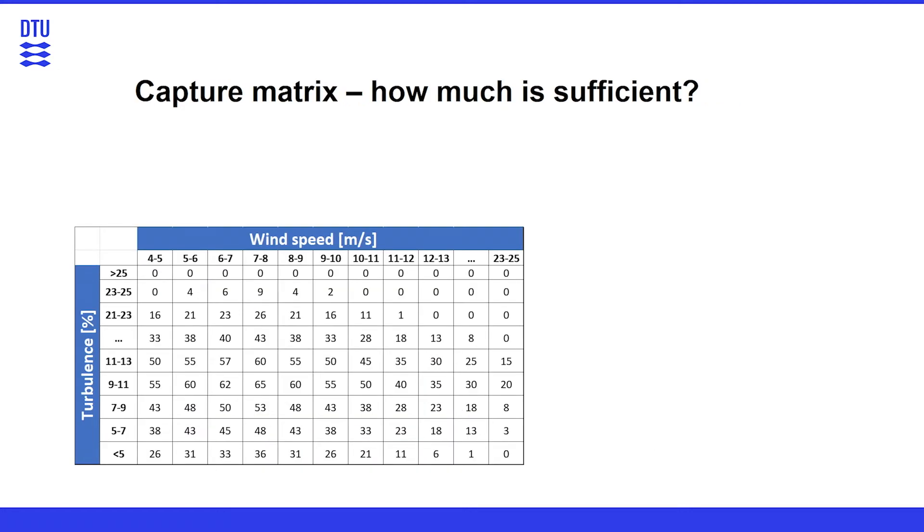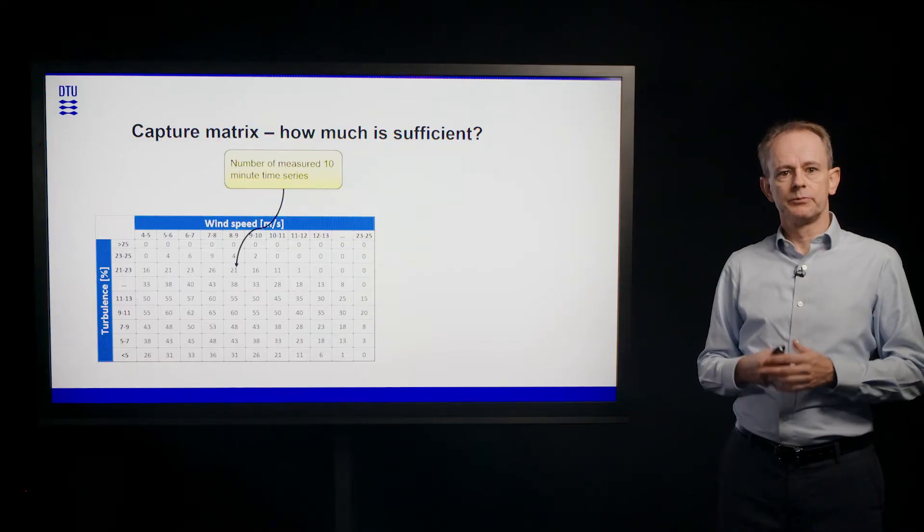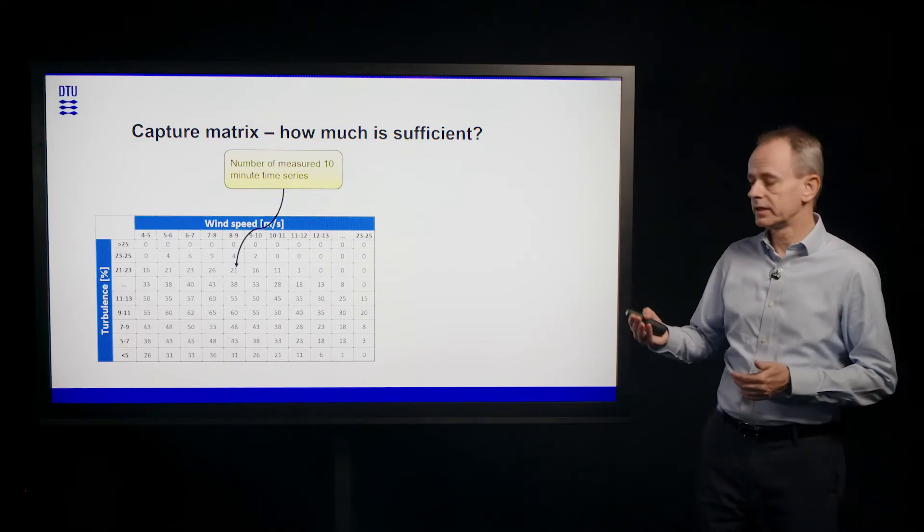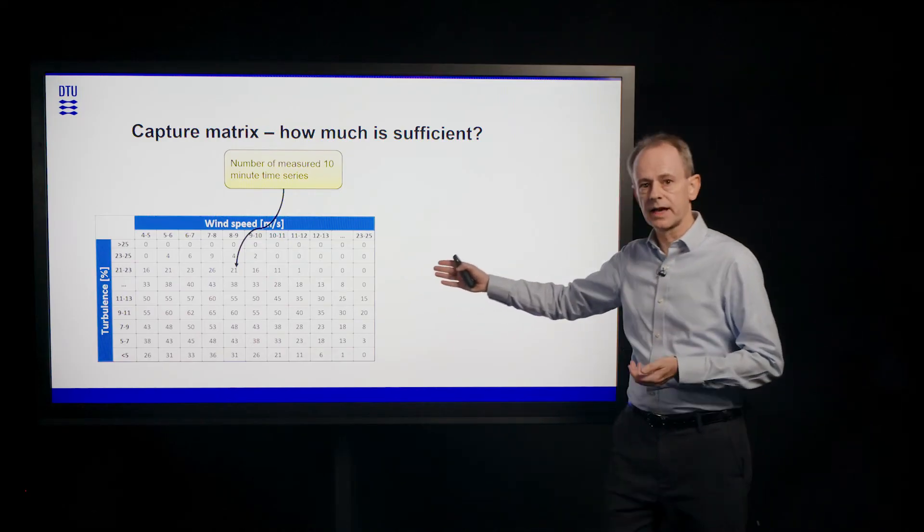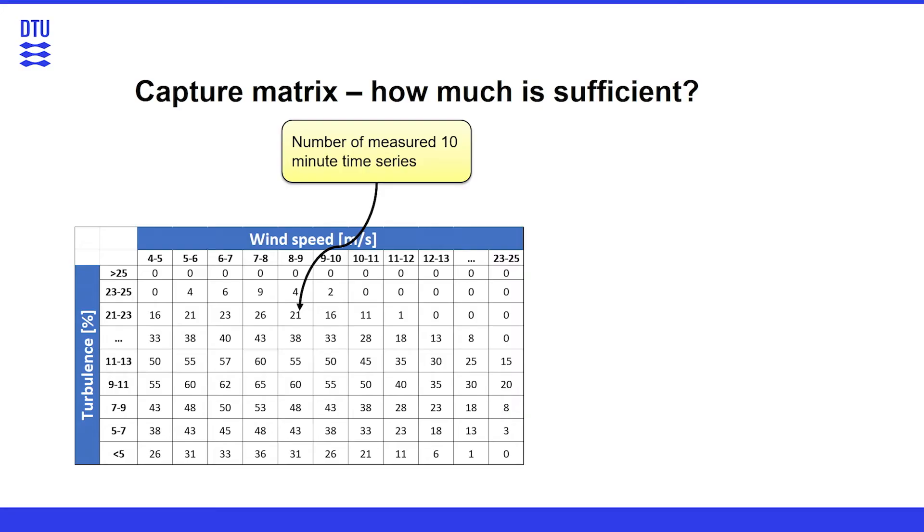In order for us to validate a design model, we need to ensure that we have enough measurements. And the tool for that is a capture matrix. This is a simple bookkeeping system where we record how many measurements do we have at certain conditions. At which wind speed and at which turbulence intensity.